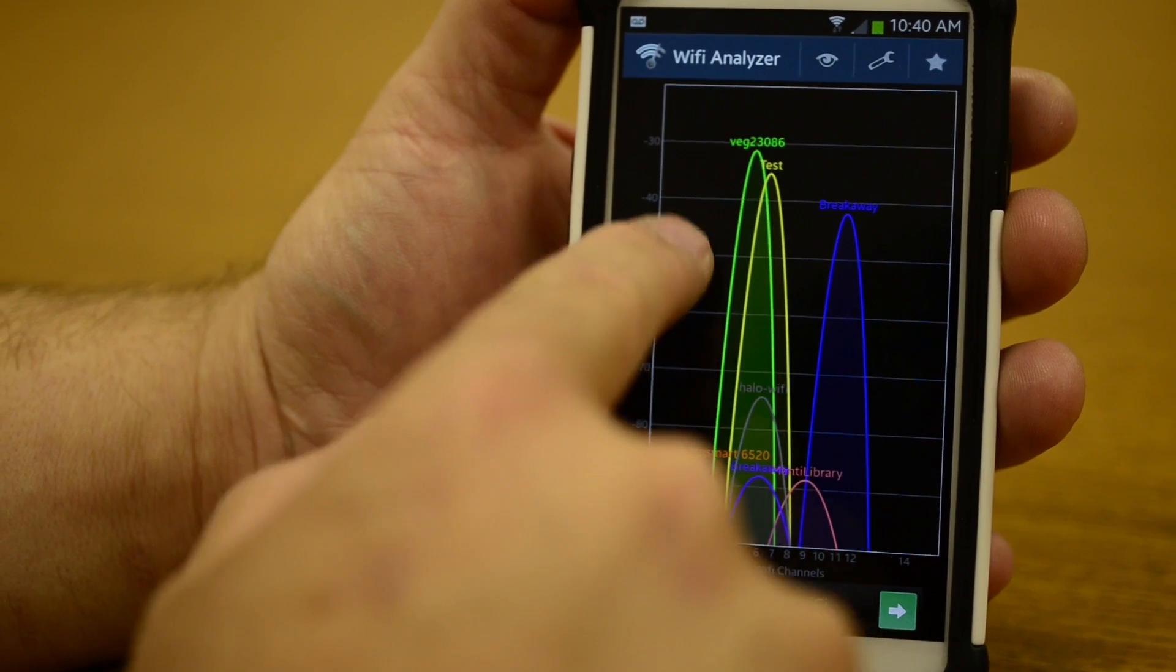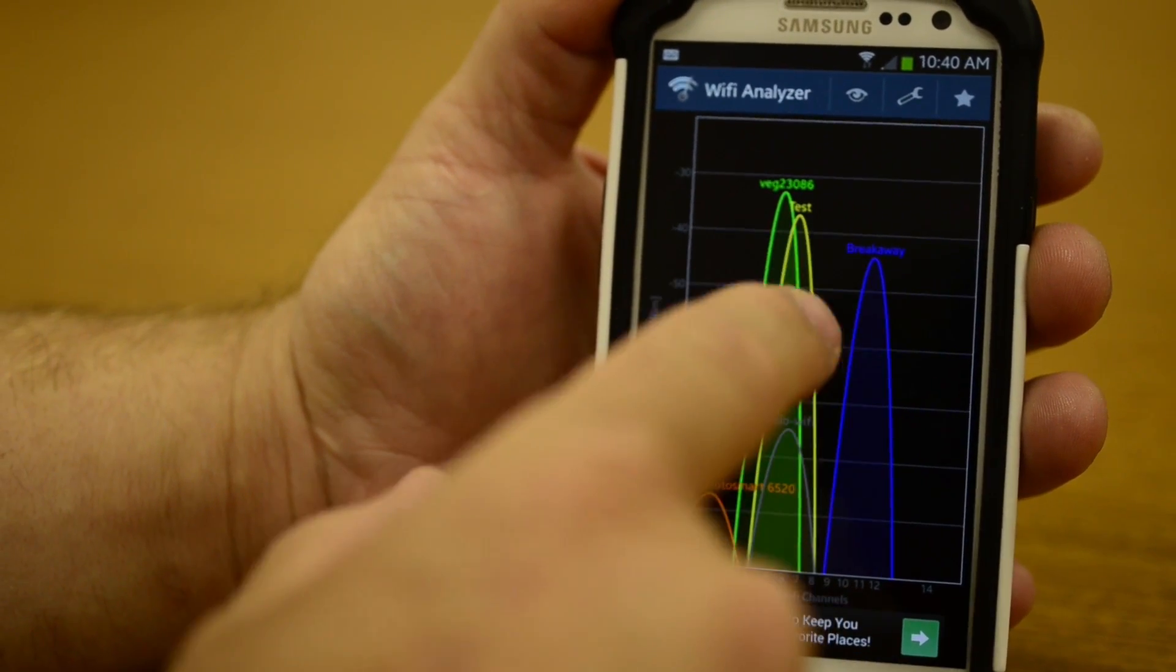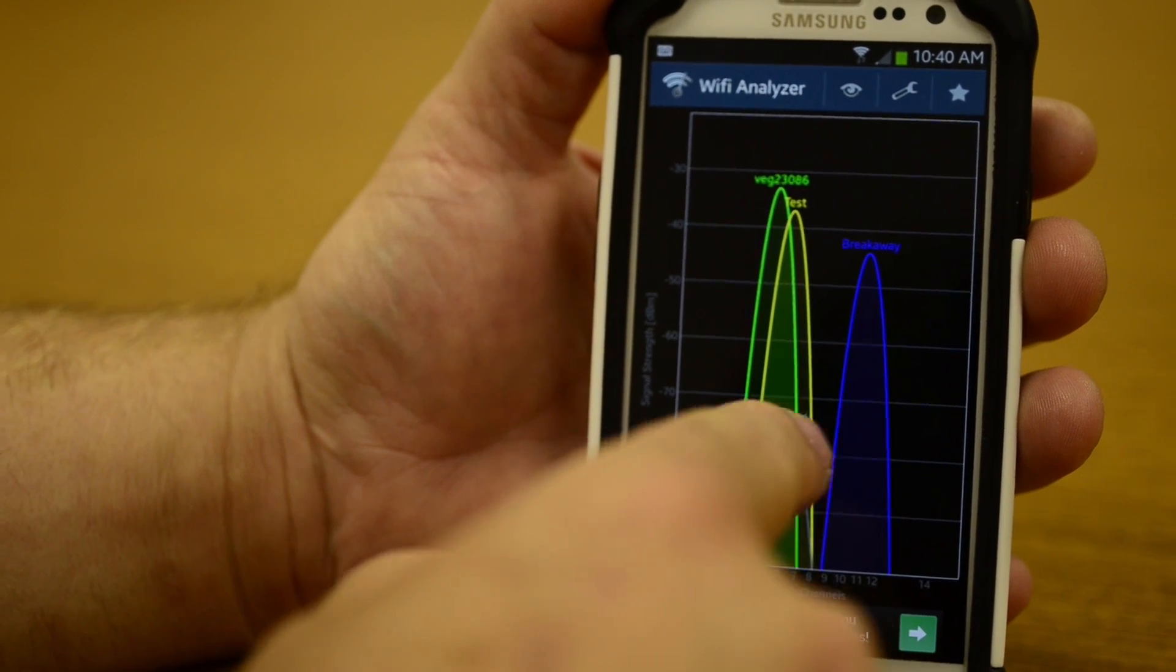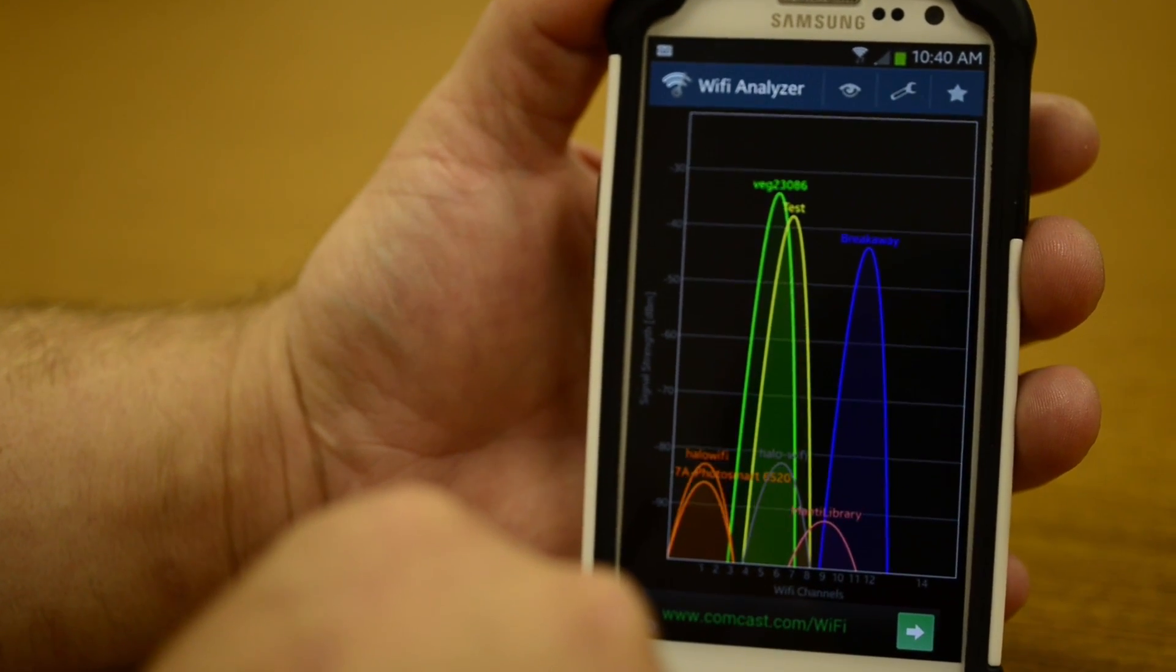You can see right here they can interfere with each other. So what you can do is take your wireless signal and move it to a different channel so that it's not interfered with by the others.